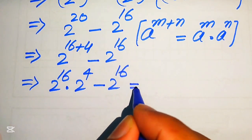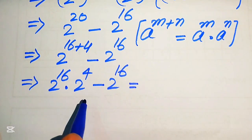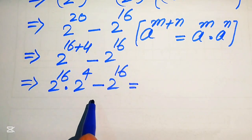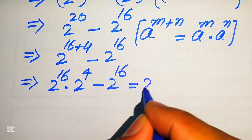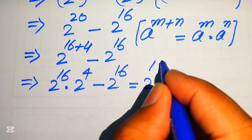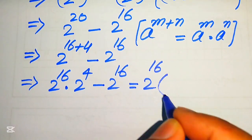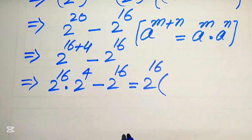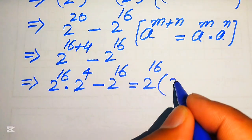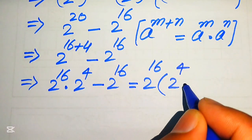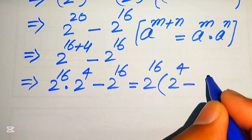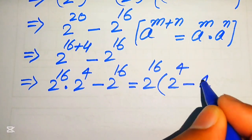You can see that from both terms we have 2 to the power of 16 as the common factor. We take out 2 to the power of 16 as common, and the remaining terms give us 2 to the power of 4 minus 1.